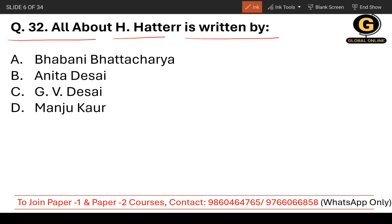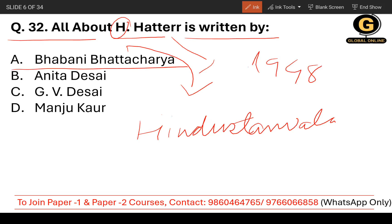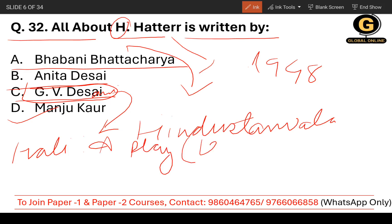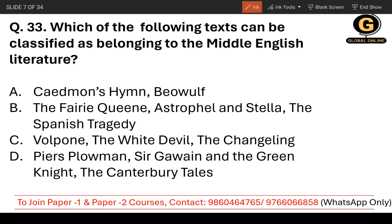Question number 32: All About H. Hatter — here 'H' stands for 'Hindustan-wala'. It was published in 1948. The options are Bhavani Bhattacharya, Anita Desai, G.V. Desani, and Manju Kaur. The correct answer is G.V. Desani. His other works include Hali, a play published in 1952, and Collected Stories, published in 1991. The correct answer is option C.